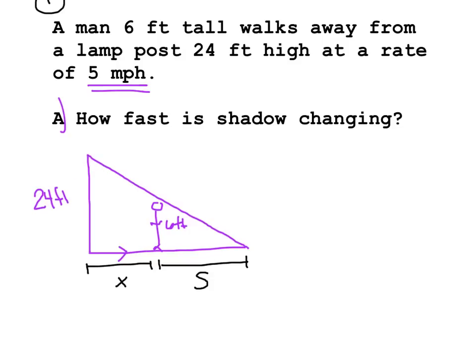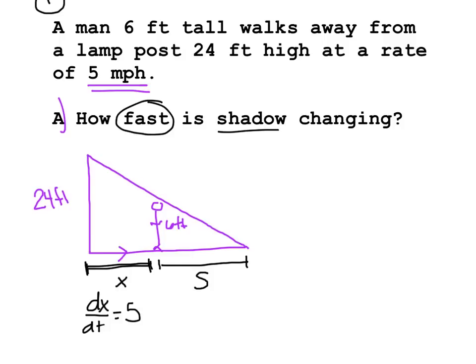He's walking away at a rate of 5 miles per hour. If I'm here and I start walking away, we're describing that rate — dx/dt is 5. Positive 5, because that distance is getting bigger. Now, we have all the information we need. We just have to identify what we're looking for, and we're finding how fast the rate his shadow is changing, so I am looking for ds/dt.